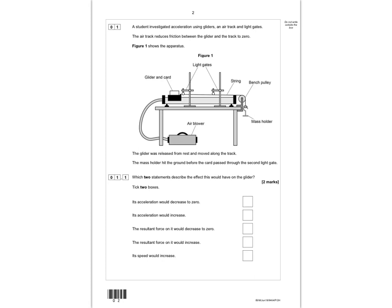The first question is about one of the required practicals — the one where you use an air track and timing gates to investigate the force-mass relationship. A student investigates acceleration using gliders on an air track and light gates. The air track reduces friction to zero, and figure 1 shows the setup.